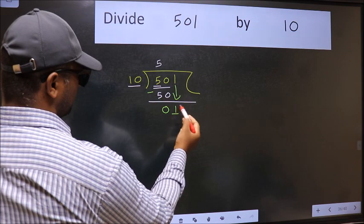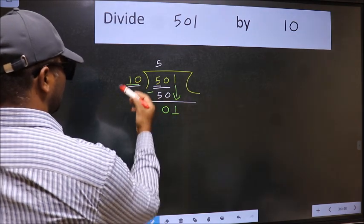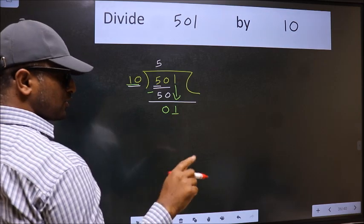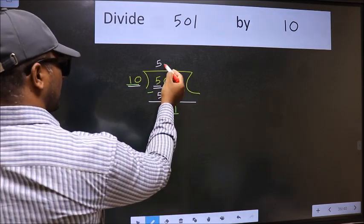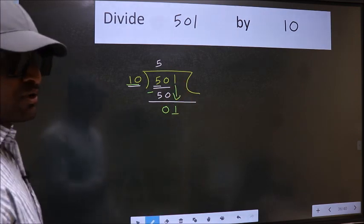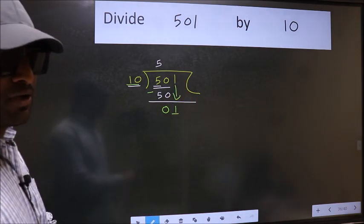Here we have 1 and here 10. 1 is smaller than 10. So what many do is they directly put dot, take 0. Which is wrong. Why is it wrong?